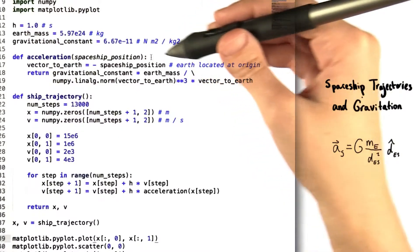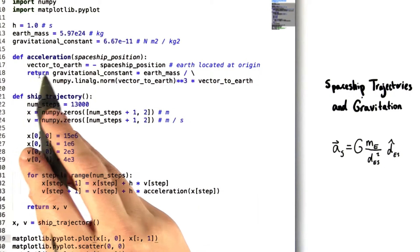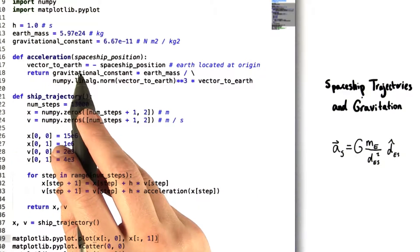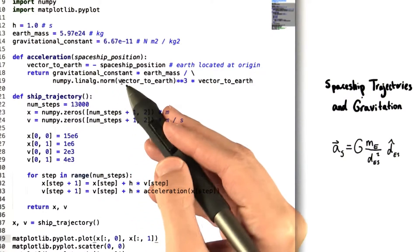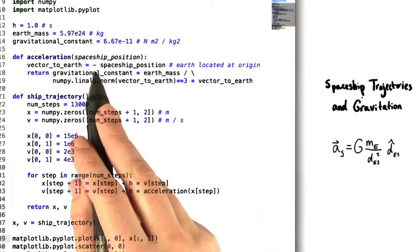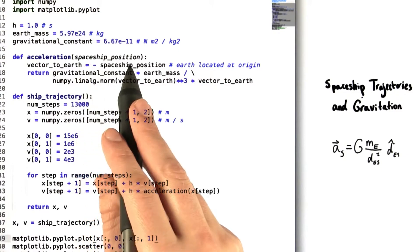We can define the position of the spaceship in relation to Earth with this variable vector to Earth. A vector pointing from the Earth to the spaceship is just the opposite of a vector pointing from the spaceship to the Earth. So we define vector to Earth as the negative of this argument, spaceship position.